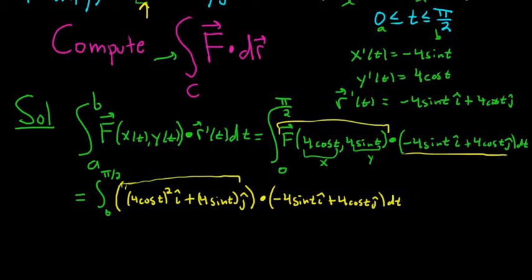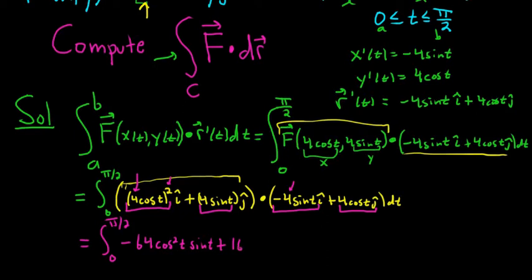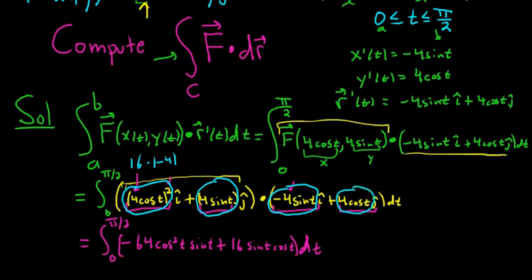Now we have to take the dot product of these two vectors. So this is equal to the definite integral from 0 to pi over 2. For the dot product, you multiply the corresponding entries. So we have 4 squared here because it's being squared, and here we have a negative 4. So 4 times 4 times 4 is 64, and it's negative. So it's negative 64 cosine squared t sine t, and then we're taking this times this. So plus 16 sine t cosine t. We had a 4 squared, so that's 16, and then times negative 4. That's negative 64 cosine squared sine t. So everything looks okay.